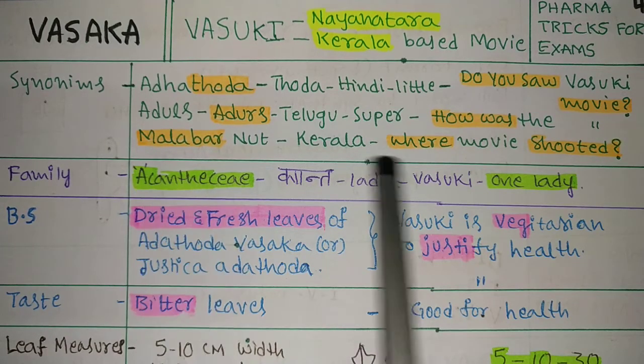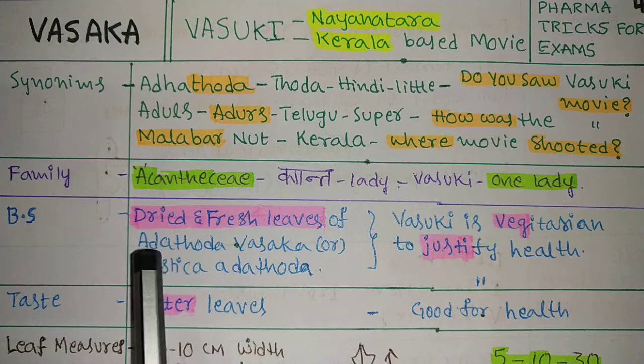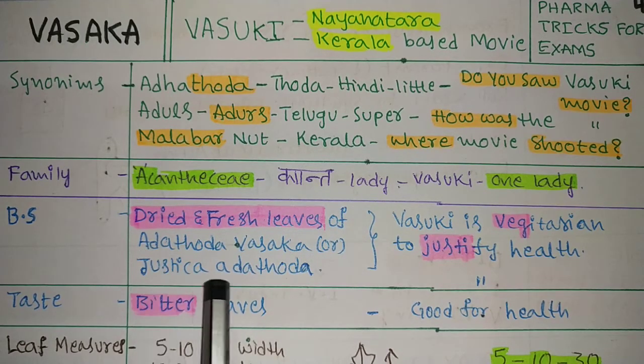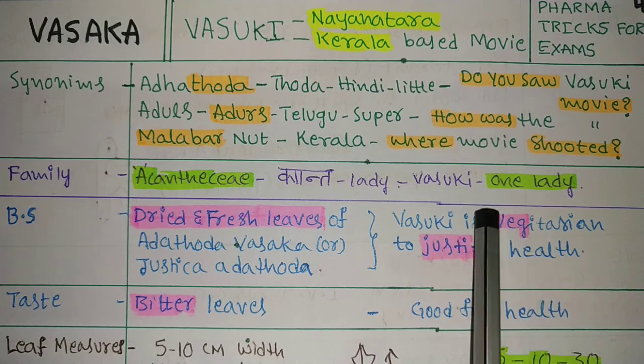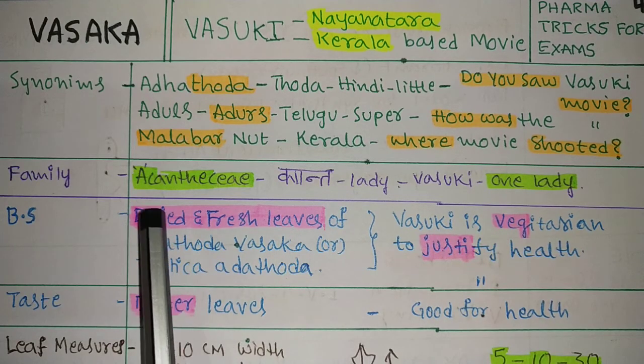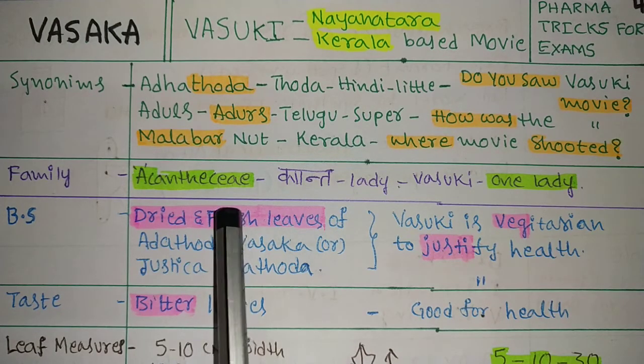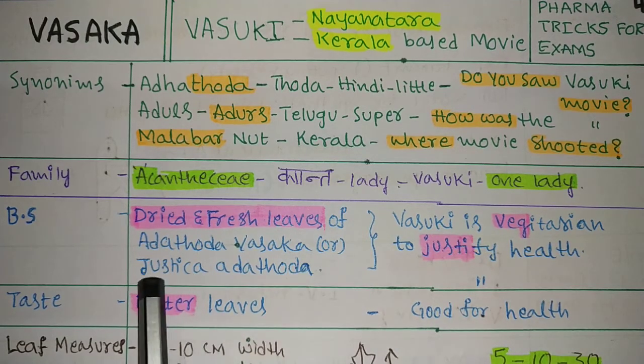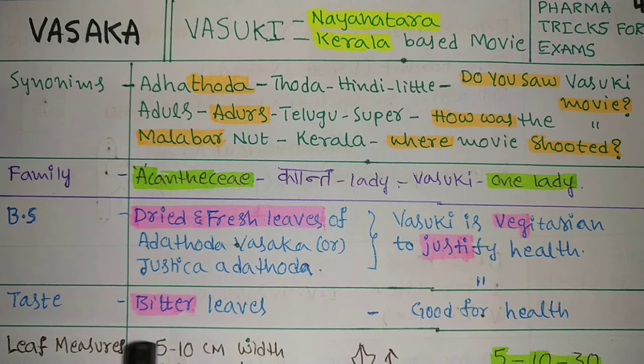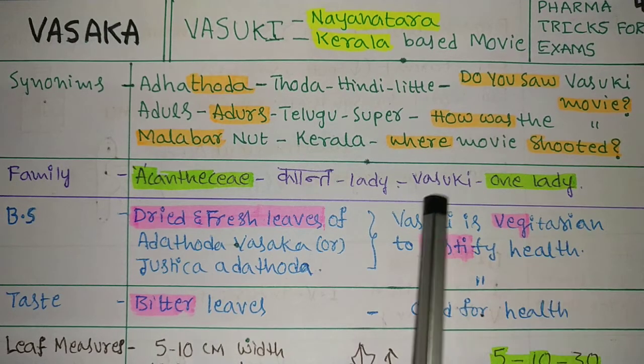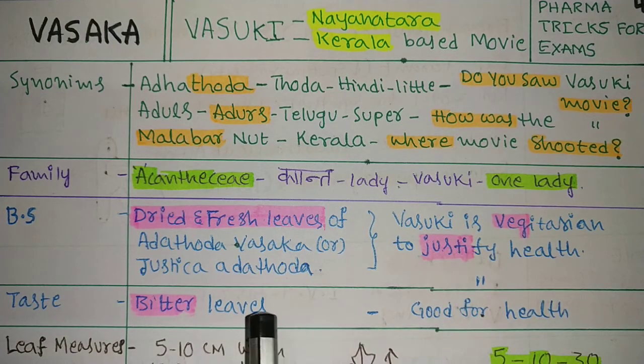Next, biological source. It is the dried and fresh leaves of Adhatoda vasaka or Justica adhatoda. Vasuki is a pure vegetarian and will eat only dried and fresh leaves. To justify the health, Justica adhatoda. And taste: the taste of the leaves is bitter. Bitter leaves are good for health. So vegetarian with a bitter taste, Vasuki is eating daily to justify the health.